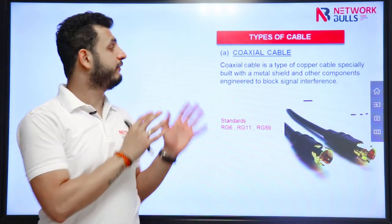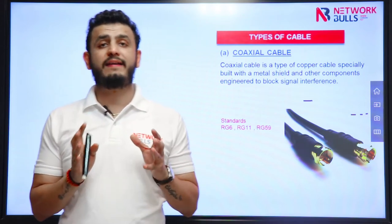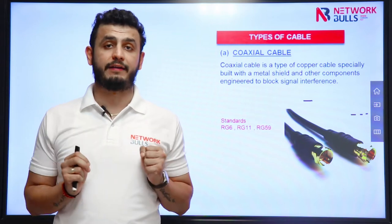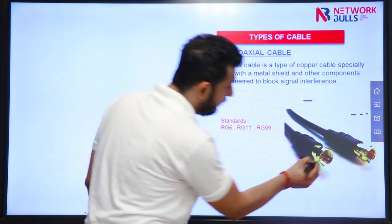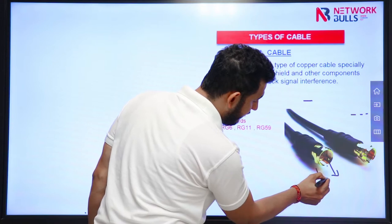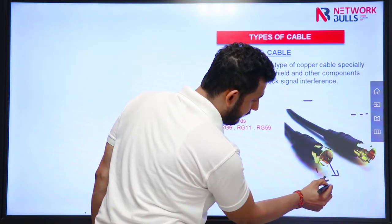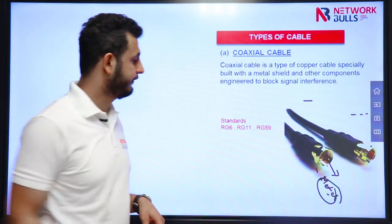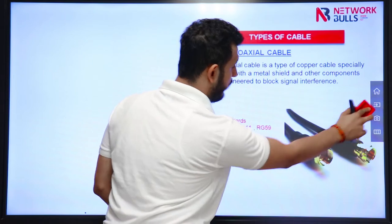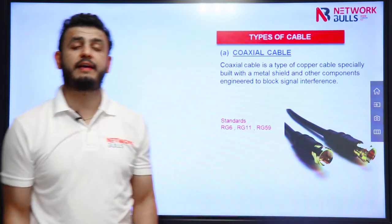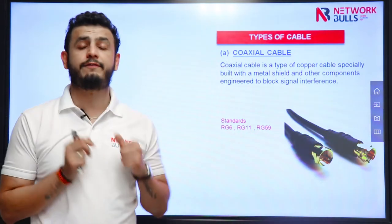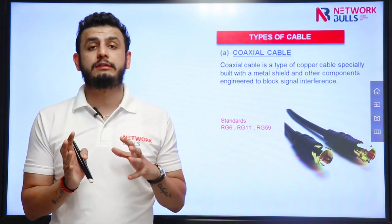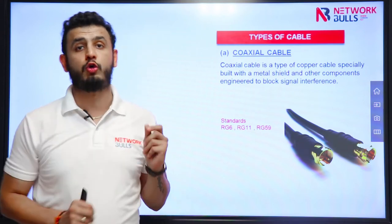The first type of cable is coaxial cable. Coaxial is a copper cable with a built-in metal shield to prevent interference. The metal shield is used to prevent interference. Different standards for coaxial cables are RG6, RG11, and RG59. These types of cables were used by cable operators to provide television service at homes.